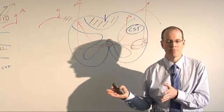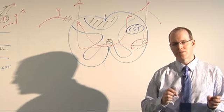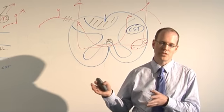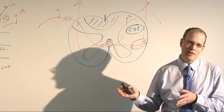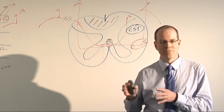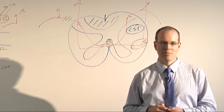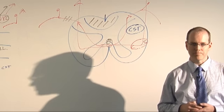The adolescent cerebral form is, kind of think of it as a delayed childhood form. So the symptoms begin maybe between the age of 10 and 20, but again, they don't do well. It's not as rapidly progressive, but it's otherwise similar.